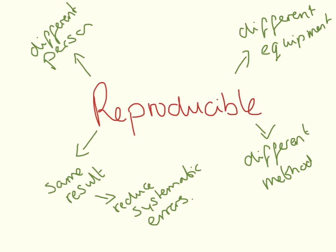Reproducible is very similar but different to repeatable. This is if a different person using different equipment and different method manages to get the same results as you. If they get the same result, it's very likely this is a true result and we are reducing systematic errors. If you don't know what that error is, check out one of my other videos.